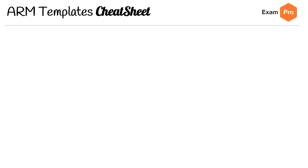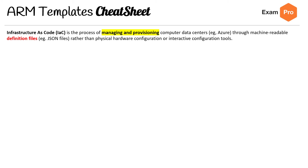Hey, this is Andrew Brown from Exam Pro and we're looking at Azure Resource Manager templates, also known as ARM templates. The thing we need to know is infrastructure as code. This is the process of managing and provisioning computer data centers through machine readable definition files such as JSON files, rather than physical hardware configuration or interactive configuration tools.